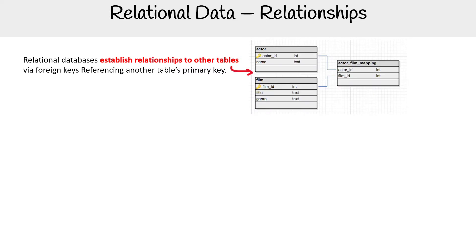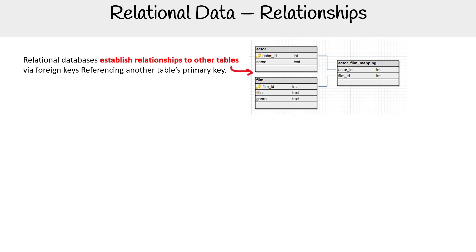Looking at the example here, there's a little icon that shows you that it's the primary key. And over here, in another table, it's referencing a foreign key. So that's the foreign key, that's the primary key.